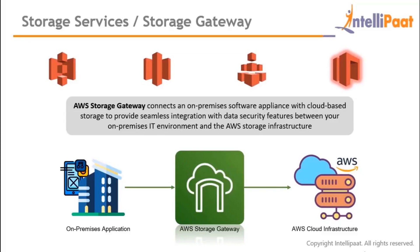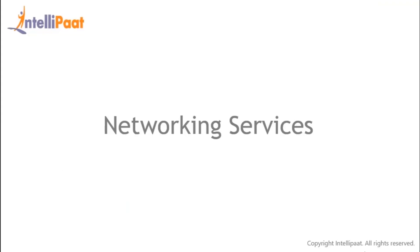AWS Storage Gateway is a gateway between on-premise software appliances and cloud-based storage. It acts as an intermediary when an on-premise application wants to use AWS cloud infrastructure services. It provides seamless, easy integration with data security features between the on-premise IT environment and the AWS storage infrastructure.